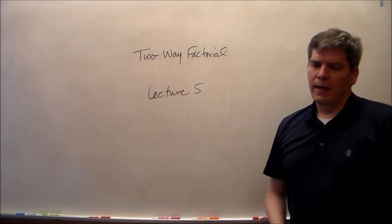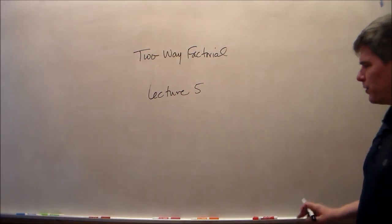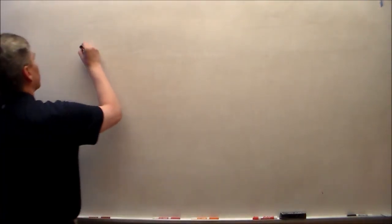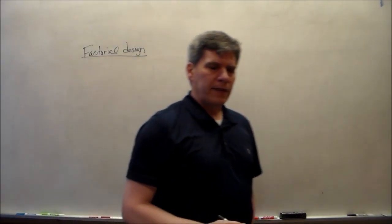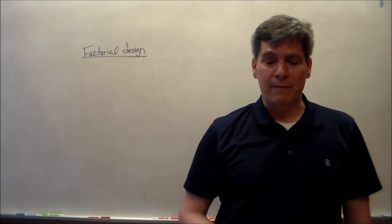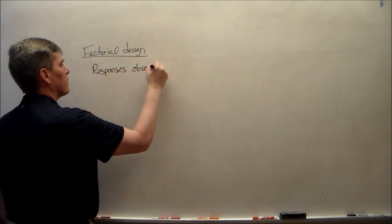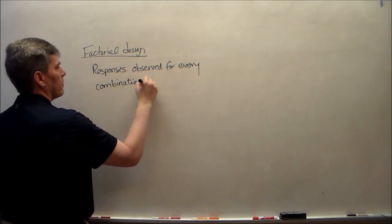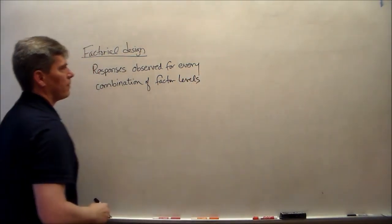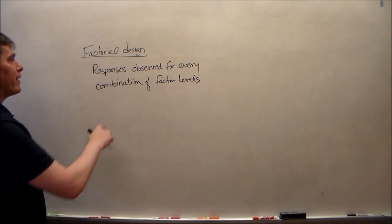So instead of just one independent variable, we're going to have two now. I'm going to start off with four definitions, beginning with what it means to be a factorial design. The definition is: responses are observed for every combination of factor levels. Responses are the Y variable — we've tested and measured Y values at every combination of factor levels.